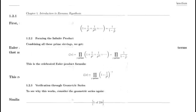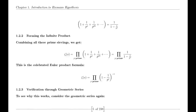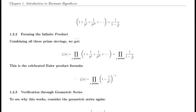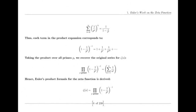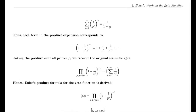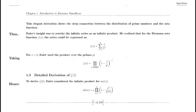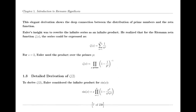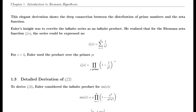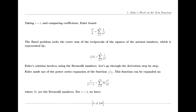Riemann also made use of the Jacobi theta function, which has significant applications in various areas of mathematics. The theta function's series representation and modular properties were instrumental in Riemann's derivation of the functional equation for the zeta function. This equation is crucial for understanding the zeta function's behavior across the complex plane and highlights its intricate connections to other mathematical functions.